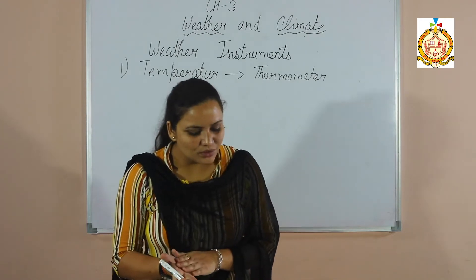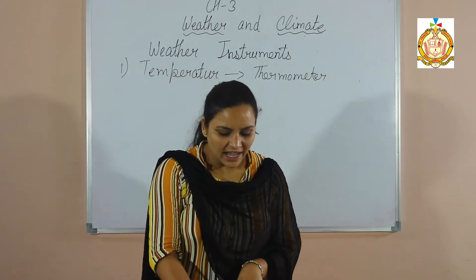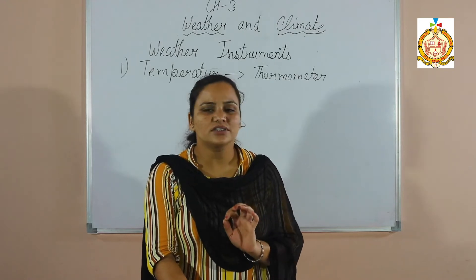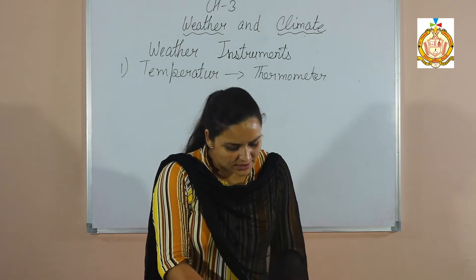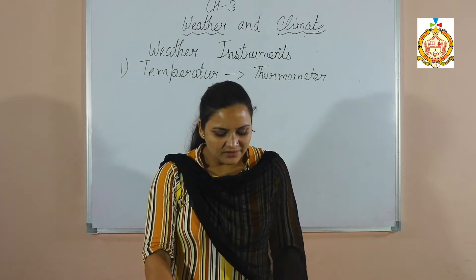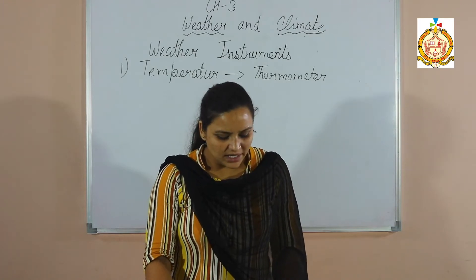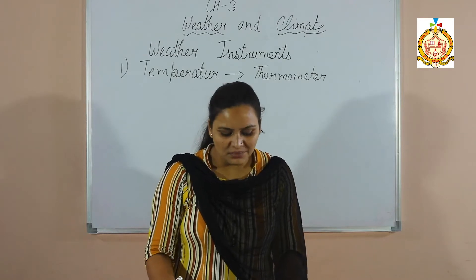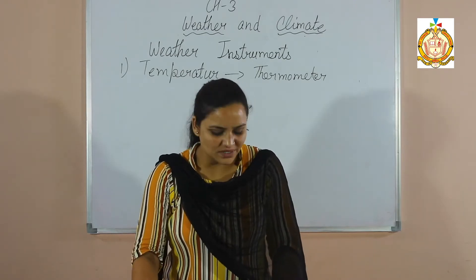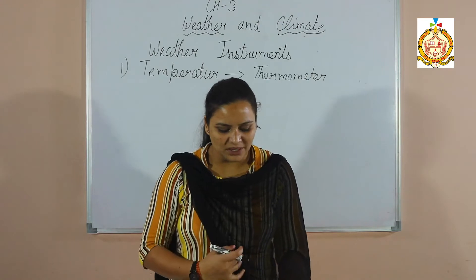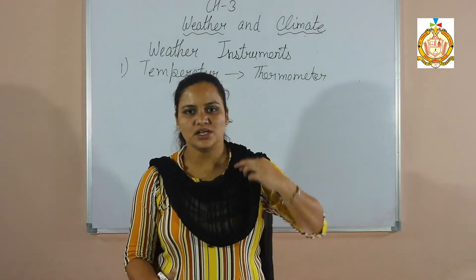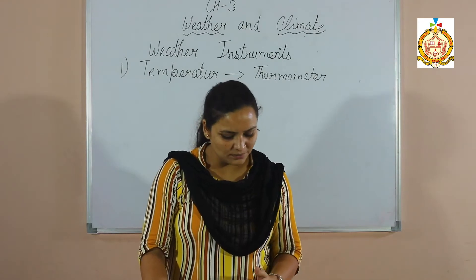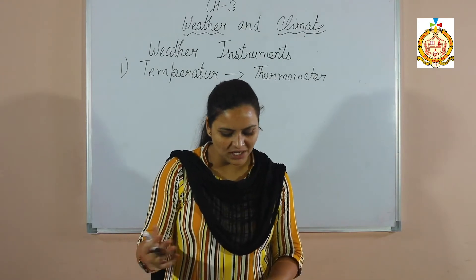Temperature is marked with F for the Fahrenheit scale and C for Celsius. Air temperature at any given place changes throughout the day. A special type of thermometer called the Six's Maximum and Minimum Thermometer is used to measure the maximum and minimum temperature throughout the year at a particular place.